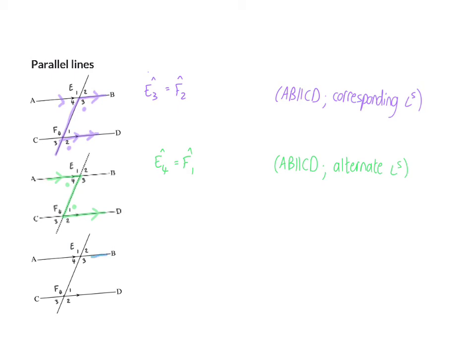The last option is when I want to use the U, and once again for the U, those two arms have to be parallel. But in my U, I cannot say that the angles are equal — instead I can say that the two interior angles add up to 180 degrees. So angle E3 plus angle F1 will be 180 degrees, and once again I start by mentioning my two parallel lines, and then co-interior angles.